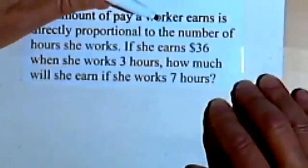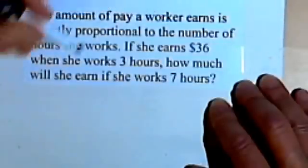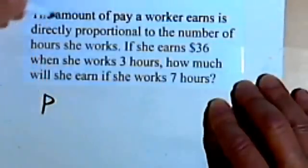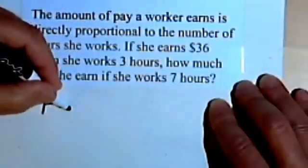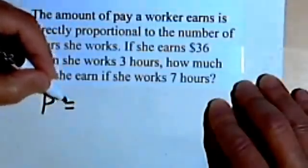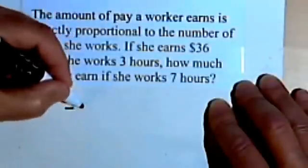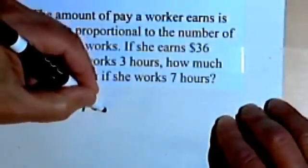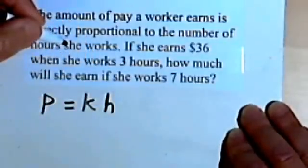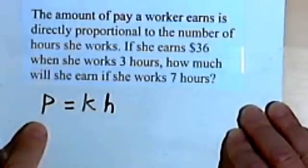So it says the amount of pay a worker earns. So the pay is directly proportional to, that means we're going to have direct variation, is directly proportional to the number of hours. So let's use an h for hours. So here's the general formula.